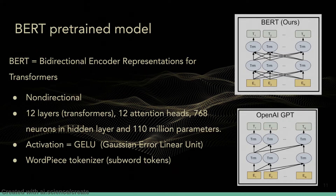The final model we used was a pre-trained BERT model, which stands for Bidirectional Encoder Representations from Transformers. The term non-directional is perhaps more suited, as the model looks at each word in the sentence simultaneously, whereas previous RNN models could only look left-to-right and right-to-left. BERT has many layers of transformers, self-attention heads, feed-forward networks, and over 100 million parameters. It uses a Gaussian error linear unit activation function and a word-piece tokenizer, which can split words into sub-word tokens, significantly increasing the model's vocabulary. BERT is regarded as one of the best NLP models and we expected it to have the best performance.